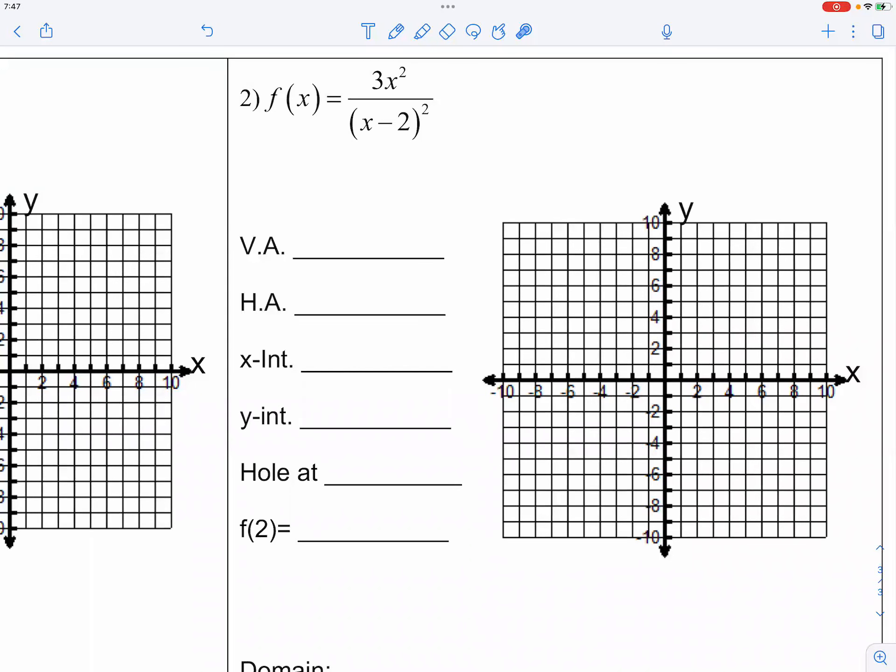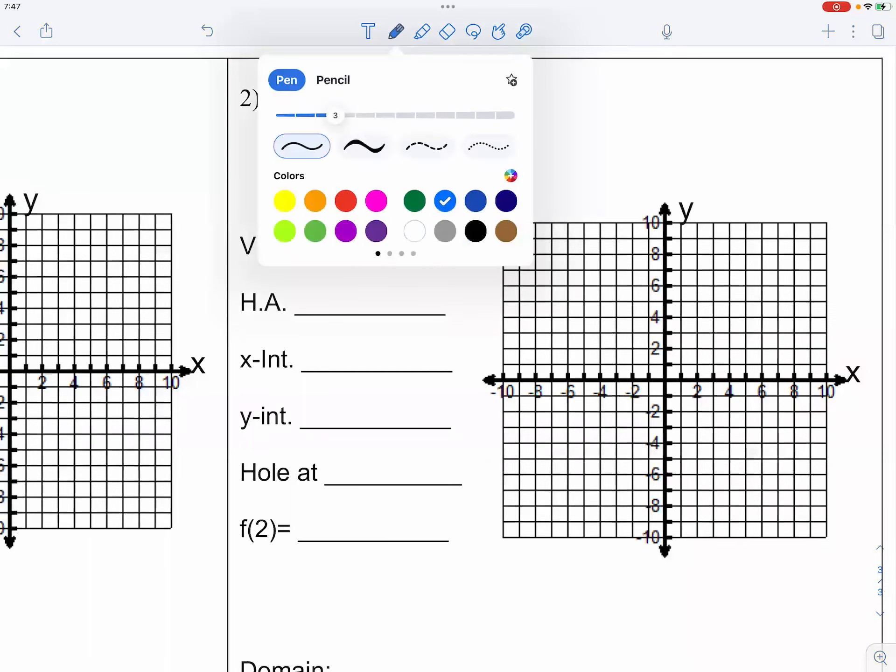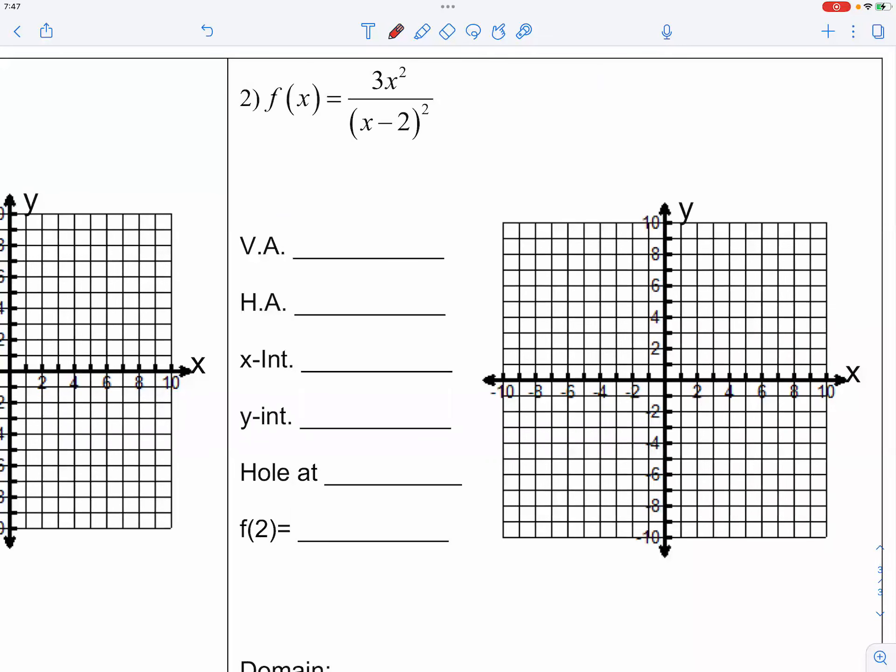So if you look at question number two, you should be able to get the vertical asymptote right away. What's the vertical asymptote in full? The whole thing, how would you describe the vertical asymptote?